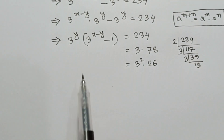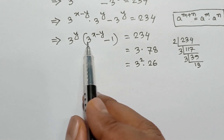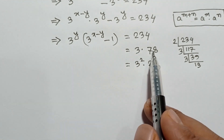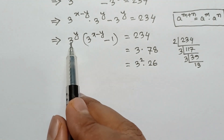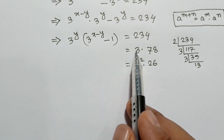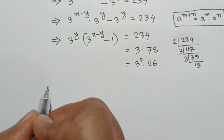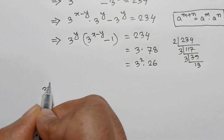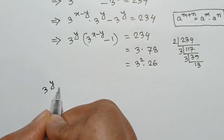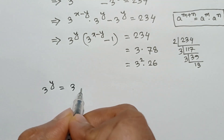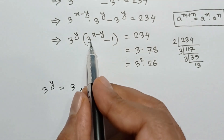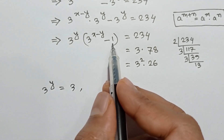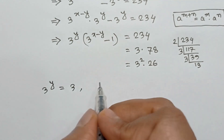So if we compare this, we can write 3 to the power y is equal to 3, and 3 to the power x minus y minus 1 is equal to 78.